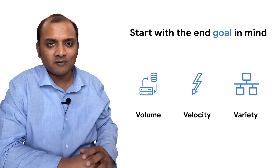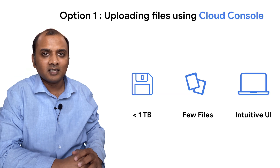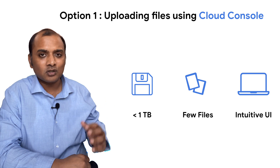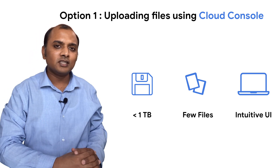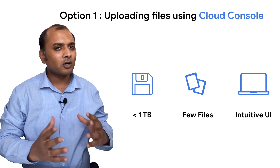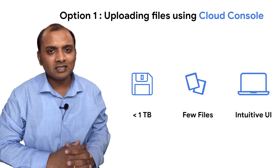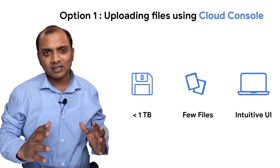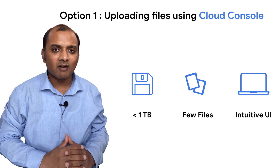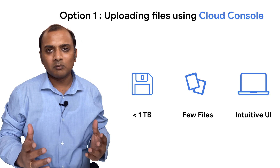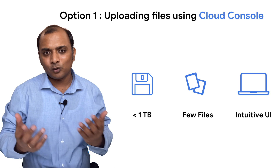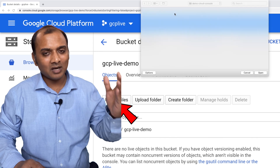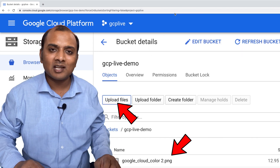Let's look at the different options for batch ingestion. The first and probably easiest way to ingest data is using the Cloud Console. Generally you would use this for less than about a terabyte worth of data — a few files — through the intuitive UI. It's purely front-end based, so if you have internet access and a browser, you can select files and upload them into the bucket. And this is what it looks like — you browse the files, select them, upload them, and they land in your storage bucket.